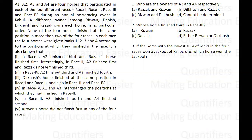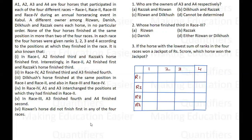There is some additional information given based on which we have to arrange the horses in their races. I am assuming that you have read the information already. The races are along the columns and the positions are along the horizontal lines. Let us try to fill the table.